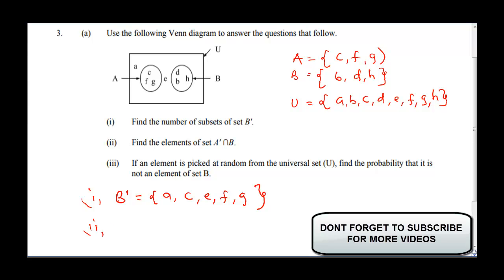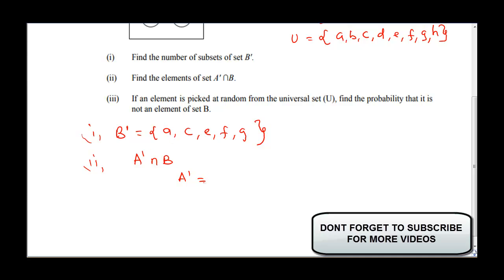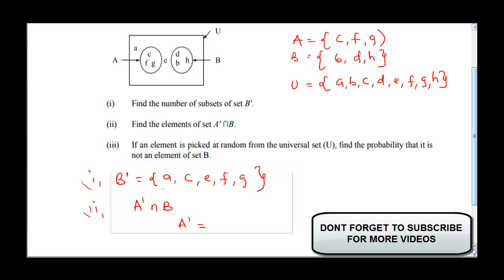Part II says we should find A complement intersection B. In order to solve this, we need to find A complement first. A complement are those elements that can be found in the universal set but cannot be found in A. Let's look at the elements in the universal set — the elements in A are C, F, and G.